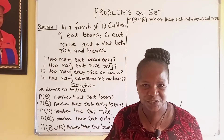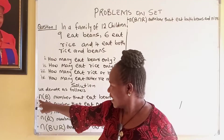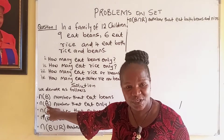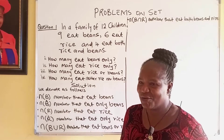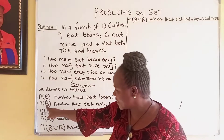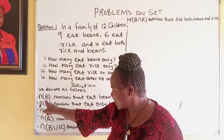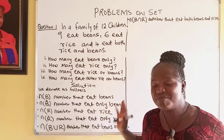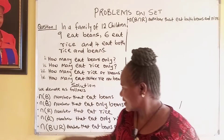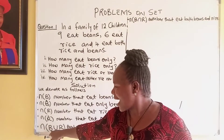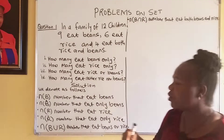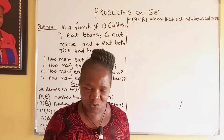First, you make your notation. Let's denote as follows: this for the number that eat beans — you are free to use any notation, but whatever you define it to be, you use it in the question. We denote the number that eat only beans, then this one for the number that eat only rice. We also use this for the number that eat rice or beans, and for the number of those that eat both beans and rice.